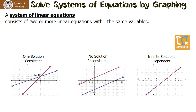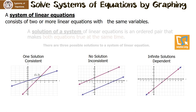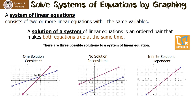A system of linear equations consists of two or more linear equations with the same variables. A solution of a system of linear equations is an ordered pair that makes both equations true at the same time. There are three possible solutions. The first is one solution — the lines intersect. Looking at this picture, the solution for this system is the ordered pair three, two.